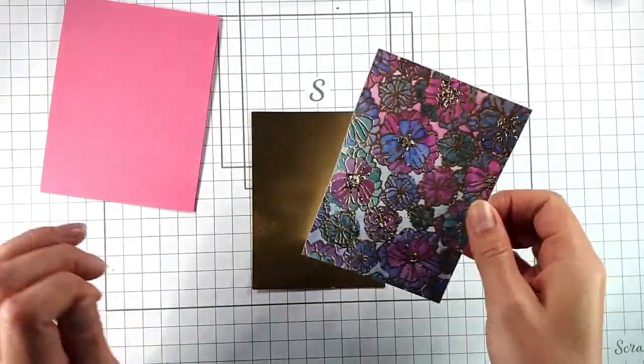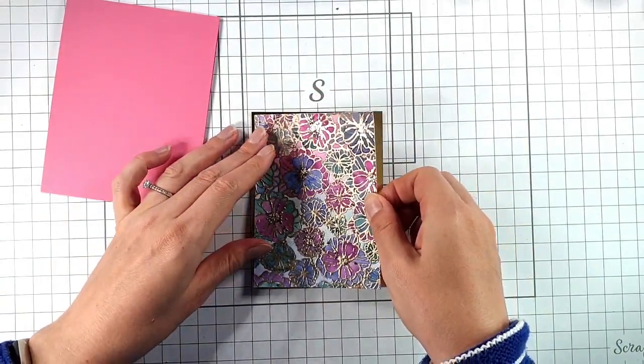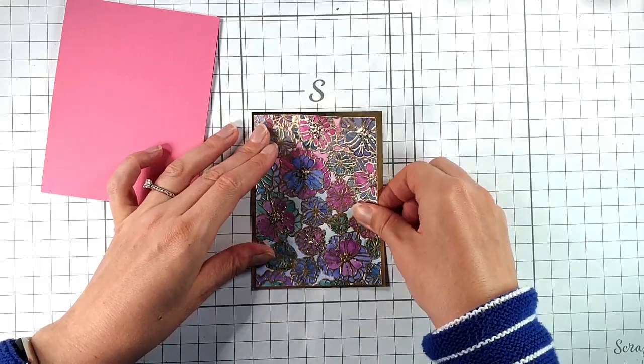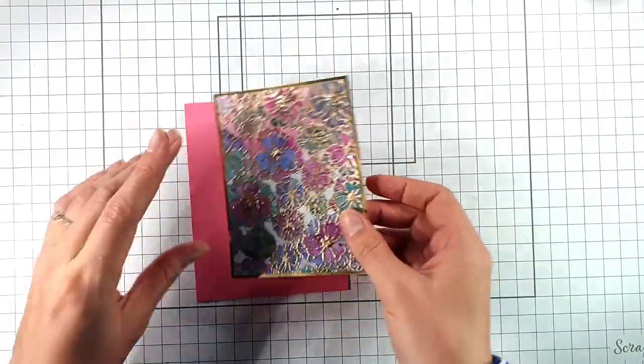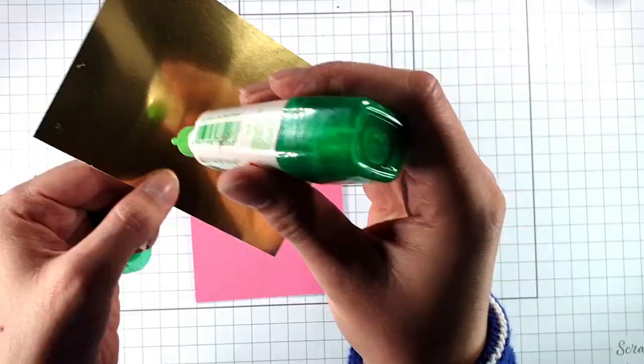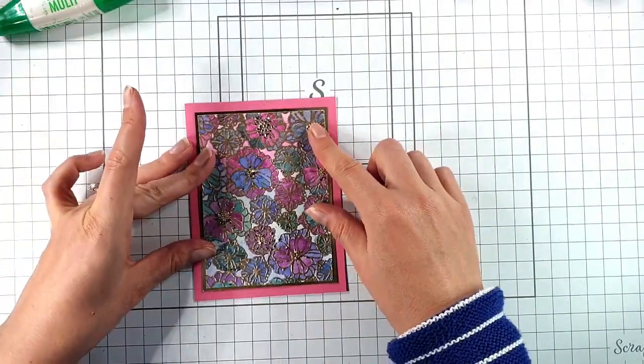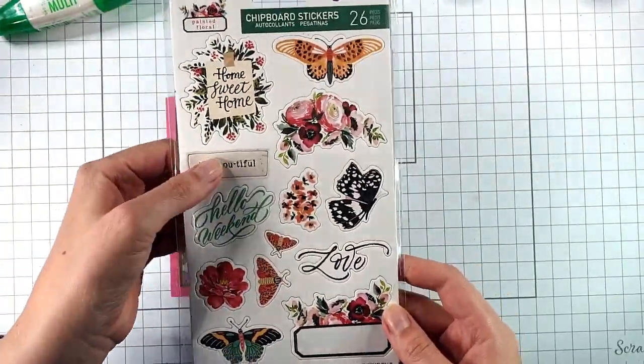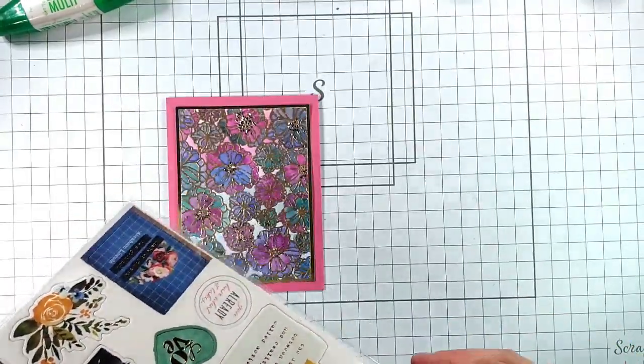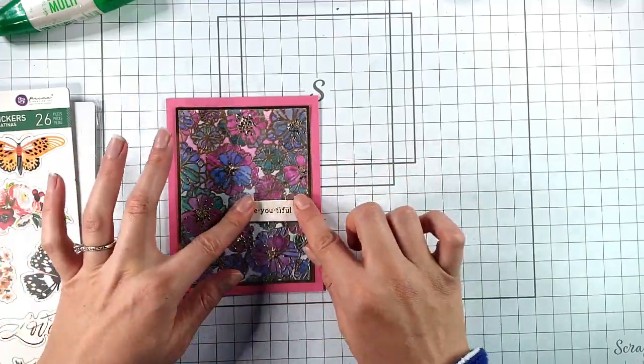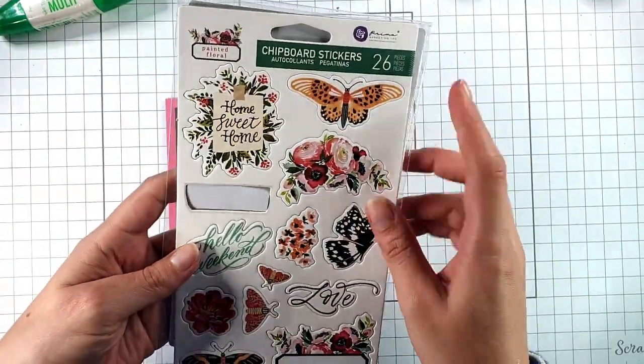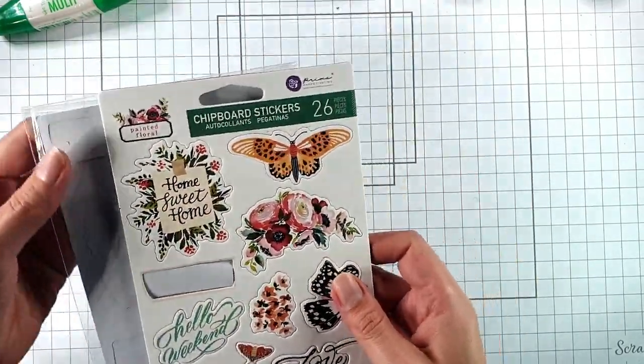Then I'm going to add that to the gold piece, and then add this to my card front. To finish it off, I'm just going to use one of these chipboard stickers—this is Beautiful. These are premium hand-painted floral stickers.